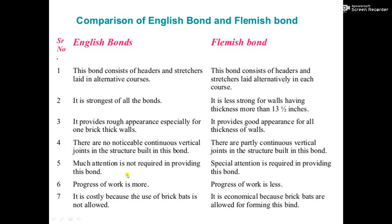Much attention is not required when providing the English bond. When we are constructing the English bond, we don't have to provide much attention over the construction, as we are just laying the header and stretcher courses. But in the Flemish bond, special attention is required, as we are properly designing the bond with alternate layers of headers and stretchers in one course only. In English bond, the progress of the work is more, as the construction is easier compared to Flemish bond.